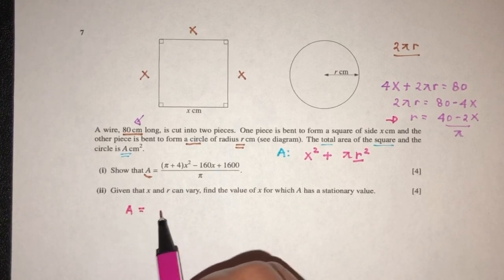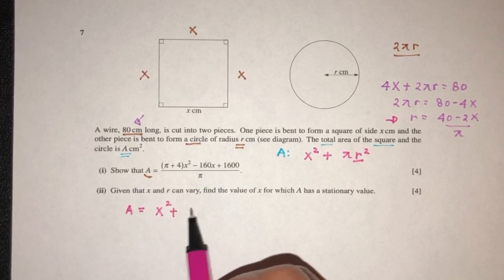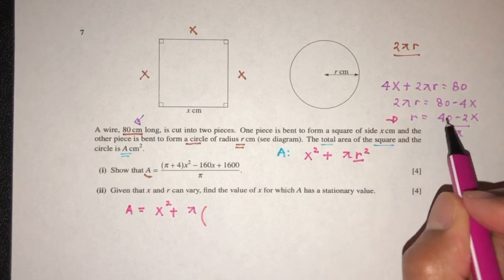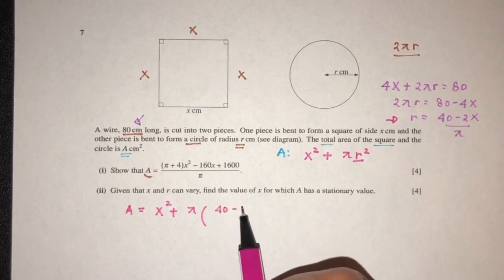It will be the value of x square, π is π, r square is 40 minus 2x over π square.